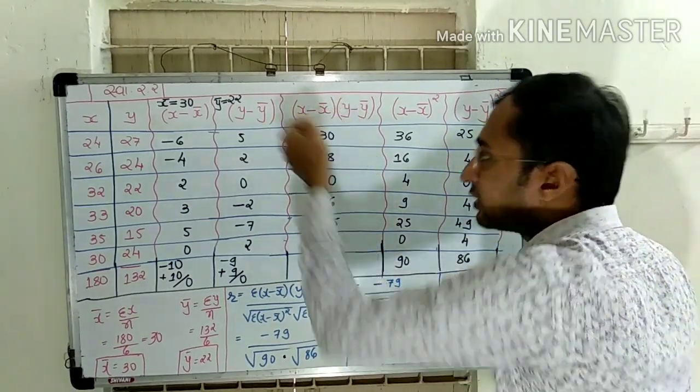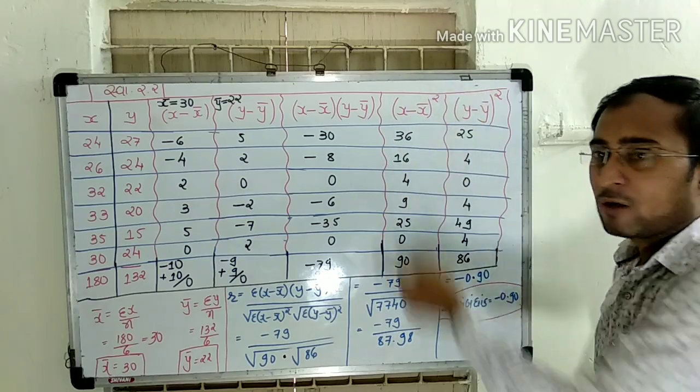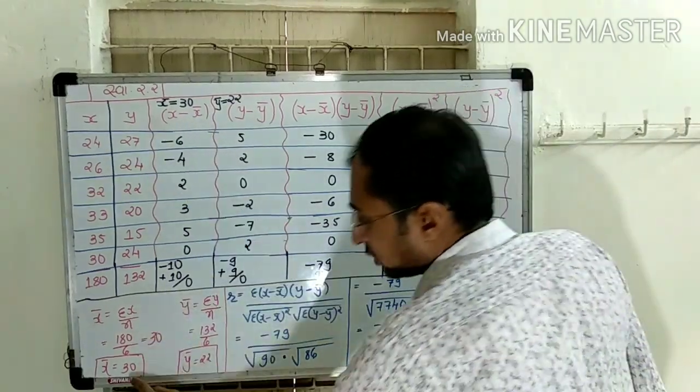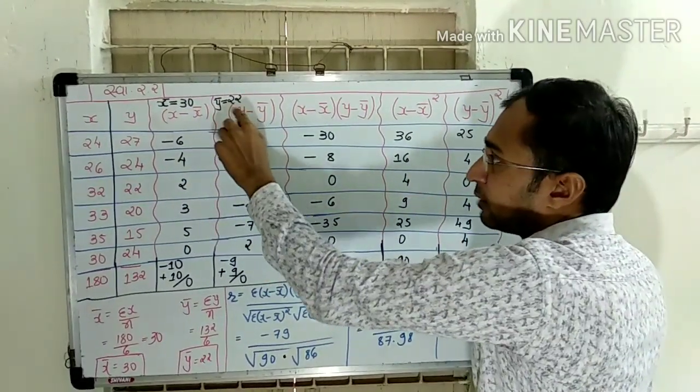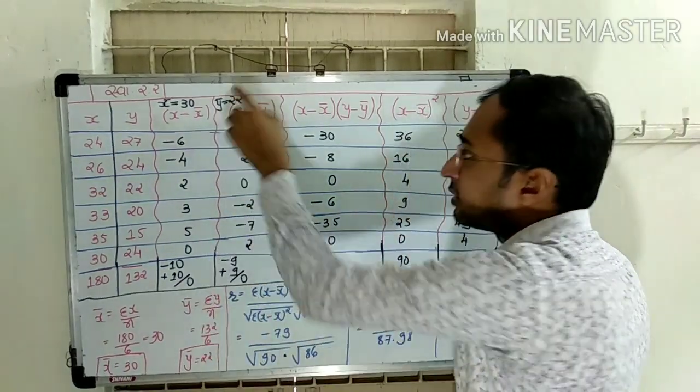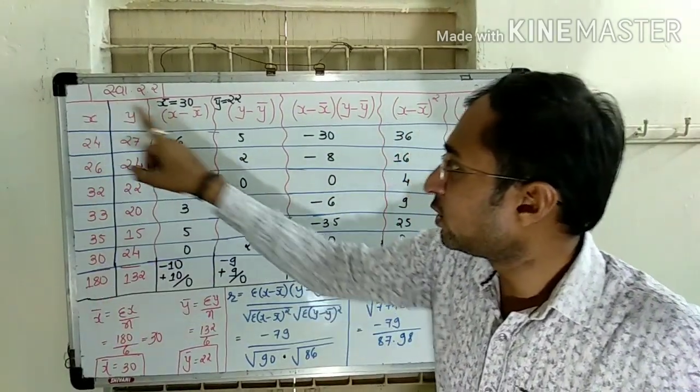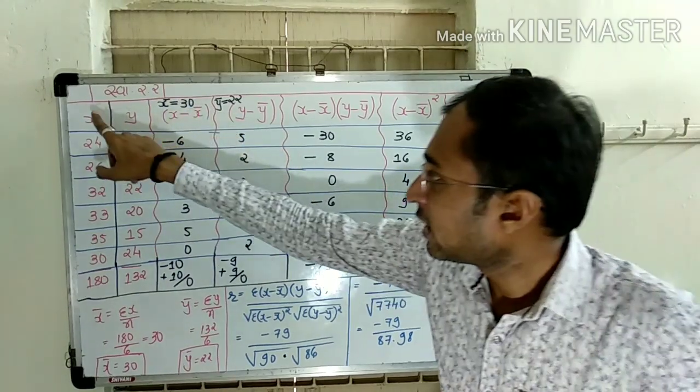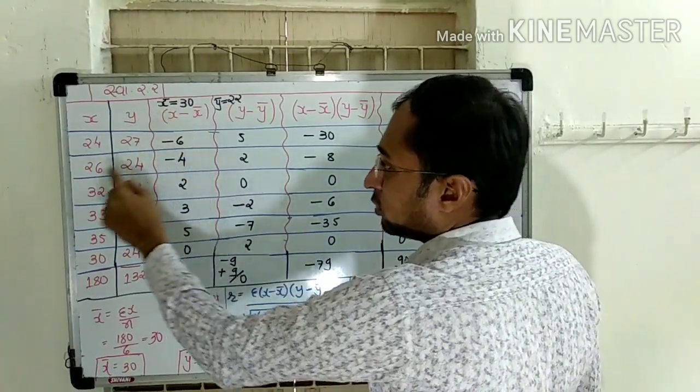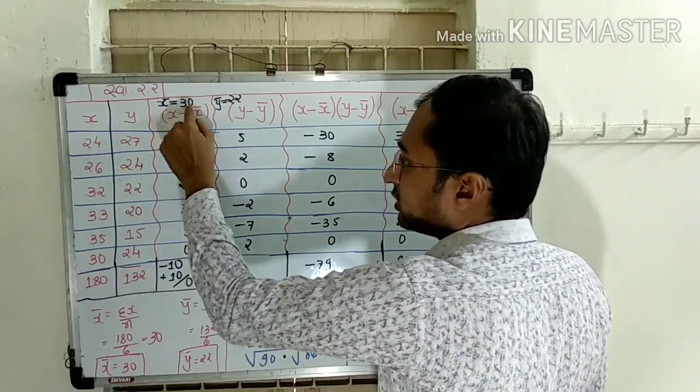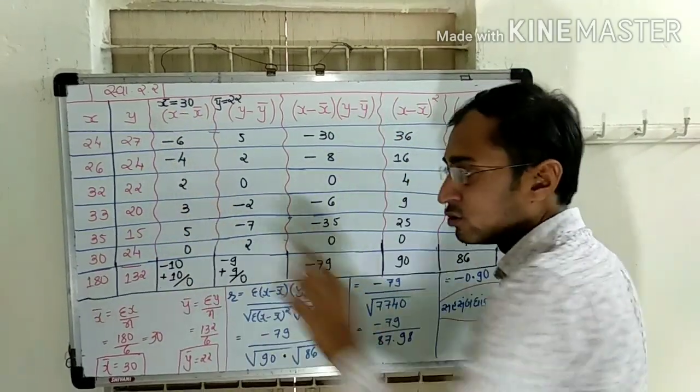So x minus x bar, y minus y bar. The answer is x minus x bar squared and y minus y bar squared. X minus x bar equals 3, so x minus x bar squared is 3. The value is 3. 24 minus 3 is 3, minus 4. 30 minus 3 is 3. 35 minus 3 is also 3.